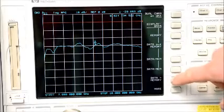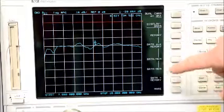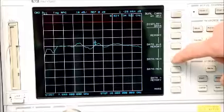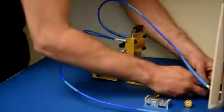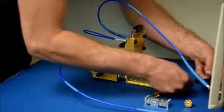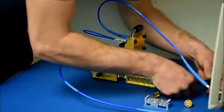We'll commit the data to memory, and then we'll use the data over memory function to zero out the system. Now that the system is calibrated, we'll remove the short from the output port of the directional coupler.